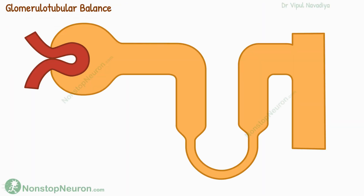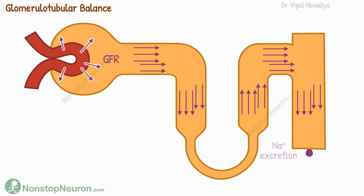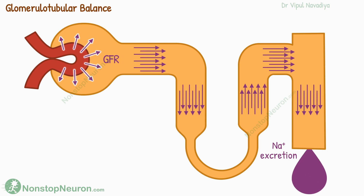First, we have glomerulotubular balance. In a previous video in the series, we saw how various factors affect the glomerular filtration rate, or GFR. These changes in GFR can cause undesired changes in the reabsorption of various solutes, including sodium. For example, too much increase in GFR tends to increase sodium excretion. If the body wants to conserve the sodium, this can cause a problem.